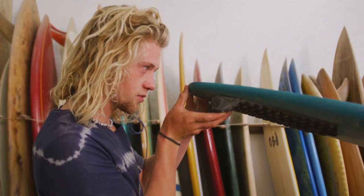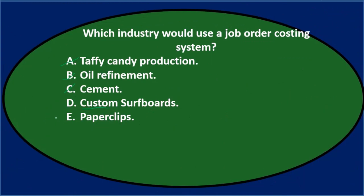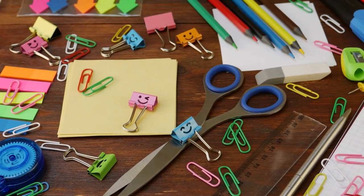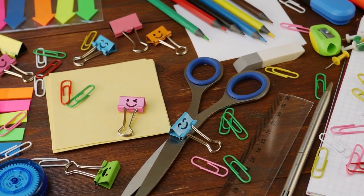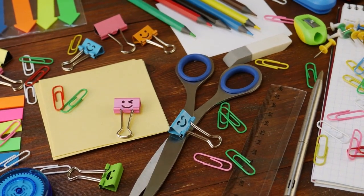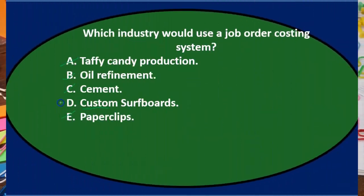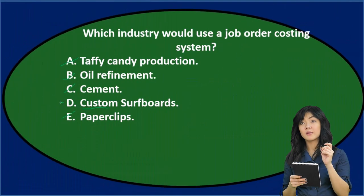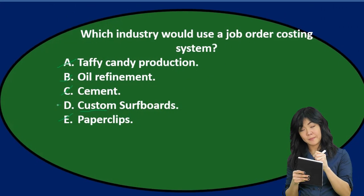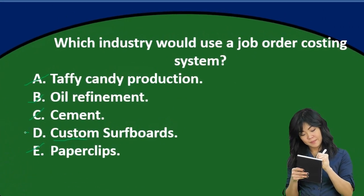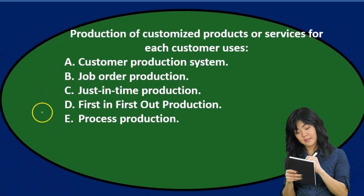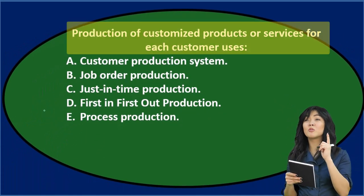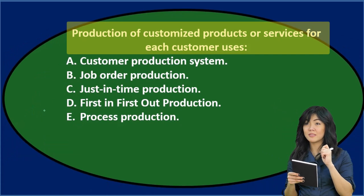Paper clips would be made systematically — they all want to be the same type of paper clip and therefore would use a process cost rather than a job cost. That leaves us with D. Final answer: which industry would use a job order costing system? D) custom surfboards.